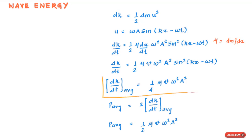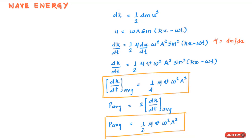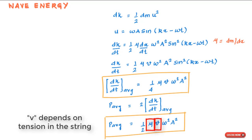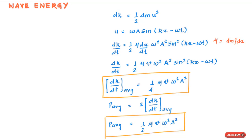This gives us: P_avg = ½ μ v ω² A². The power transmitted depends on the material and tension of the string (through v and μ), and on how the wave is generated (through ω and A). Notably, power is proportional to the square of amplitude and the square of angular frequency — a general result applicable to all wave types.